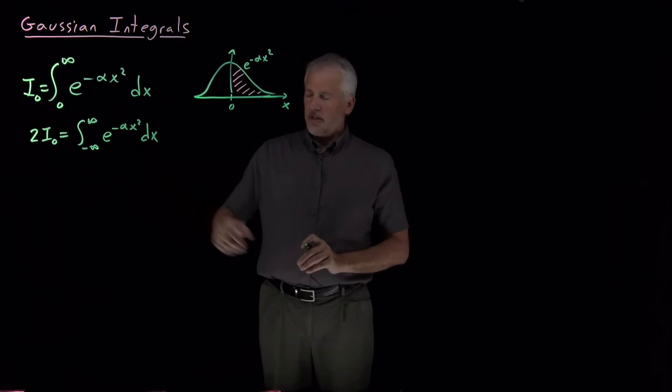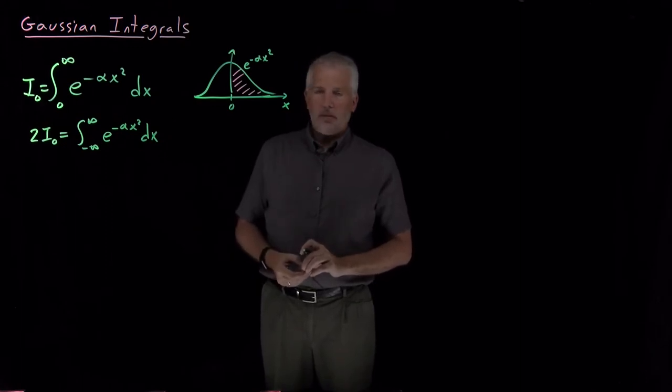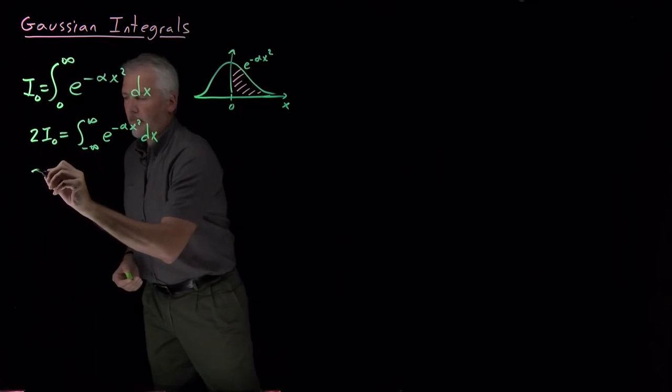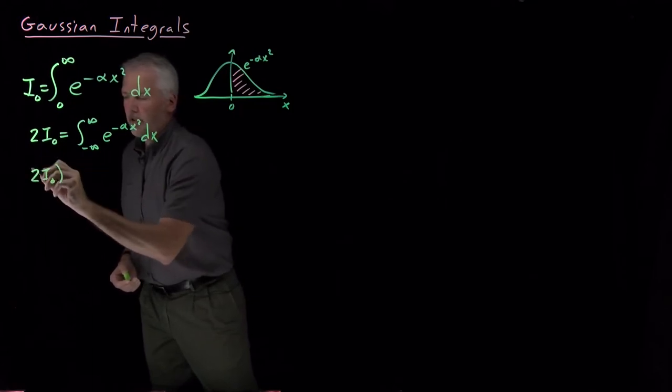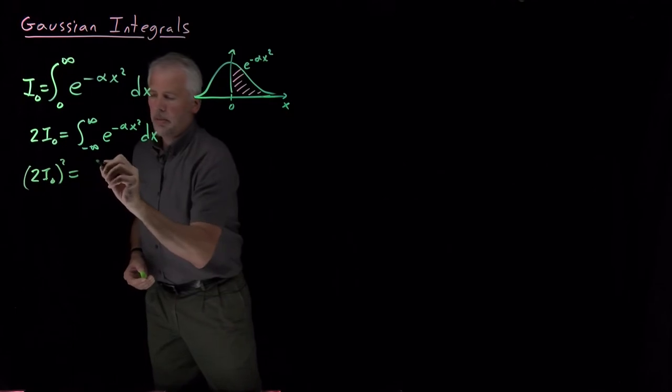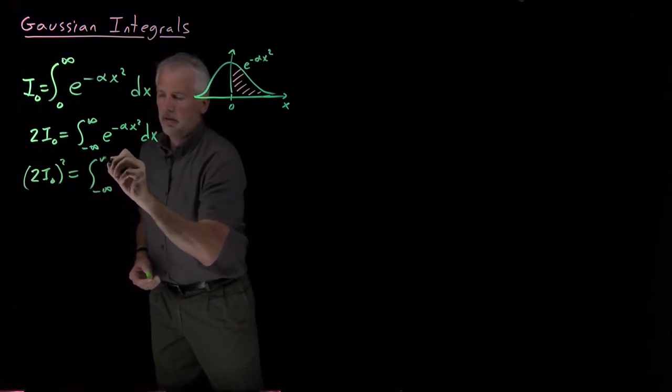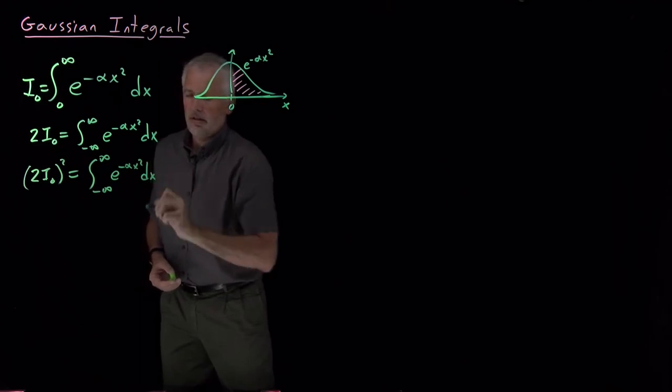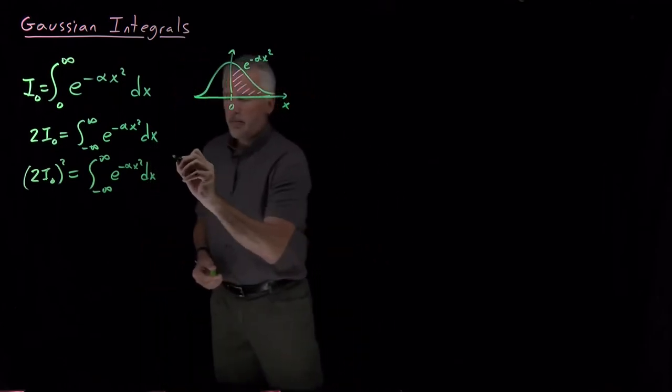This integral itself is not terribly tractable, it's not easy to get the answer to. The trick, however, is let's write this integral down twice. So what I'm going to do is I'm going to write down the integral that we've already written down, e to the minus alpha x squared integrated everywhere.